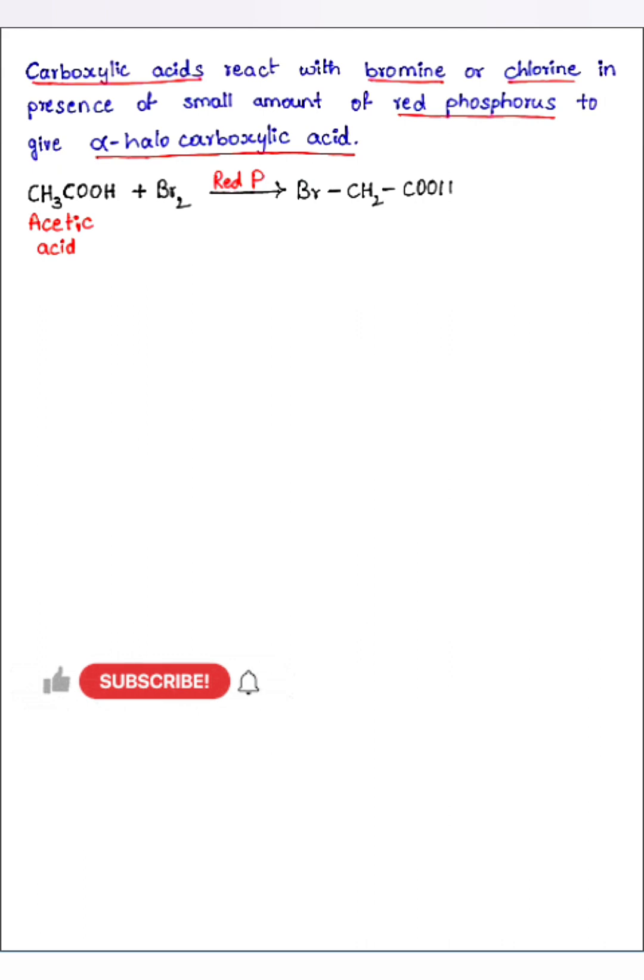So here this reaction is bromination. You can observe always acids containing alpha hydrogen. Here COOH is a functional group and beside this functional group we have CH3. So this carbon is an alpha carbon. So whatever the hydrogens which are attached to this alpha carbon we call them as alpha hydrogen.